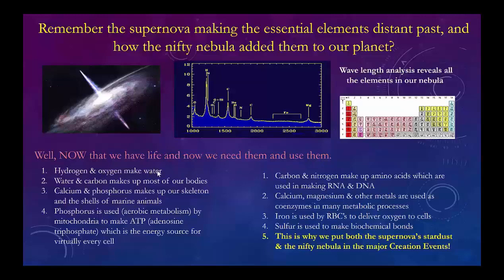Hydrogen and oxygen make water, which makes up most of our bodies along with carbon — probably 90 percent. Calcium and phosphorus make our skeletons and the shells of marine animals. Phosphorus is used in ATP, the fuel that every cell uses. Carbon and nitrogen make amino acids to make RNA and DNA. Calcium, magnesium, and other metals are used as coenzymes for metabolism. Iron is used by red cells to deliver oxygen. Sulfur is used as a common bridge in biochemical bonds. This is why we call the supernova stardust and the nifty nebula major creative events.